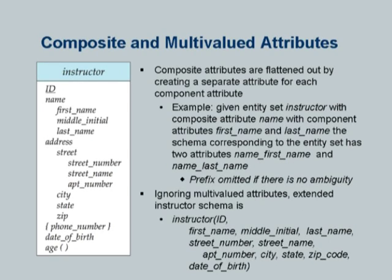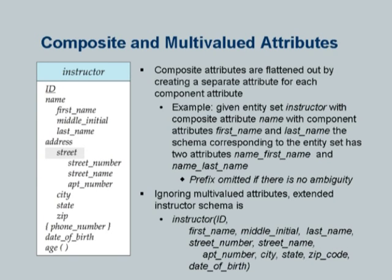In this case, first name, middle initial, last name are unique across the whole thing, so we just make those directly attributes: instructor ID, first name, middle initial, last name. Similarly, address would become street number, street name, apartment number, city, state, zip, and date of birth. What about phone number and age? Age is not an attribute - it will be a method in a class or a function in SQL. Phone number is going to be stored separately. If there are name clashes, you may have to modify names by prefixing, for example address_street_number.